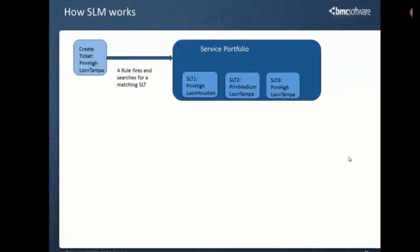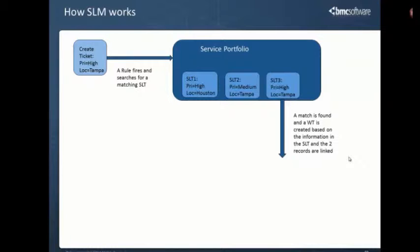When this new ticket is created, the rule is going to look through all the service level targets and match them up field by field — all the fields that have the exact same name — to see if they have the exact same value as what's in the ticket. In this case, it's going to find a match with the third one and only the third one. It could have possibly found multiple matches if configured that way. Once it finds the match, the rule is automatically going to create a new work target and calculate a response and resolution time.